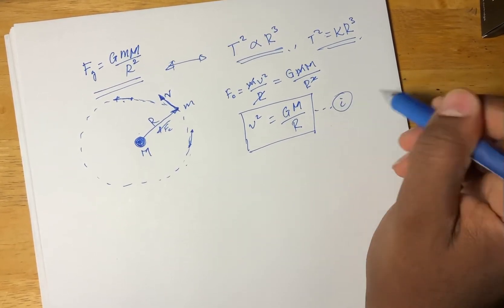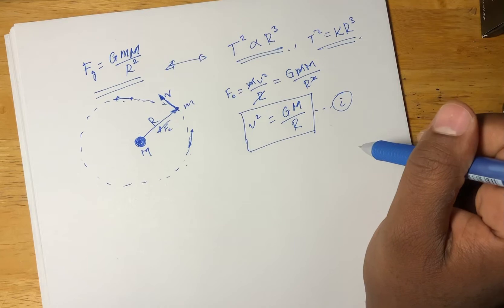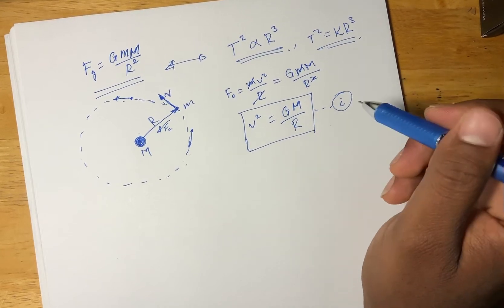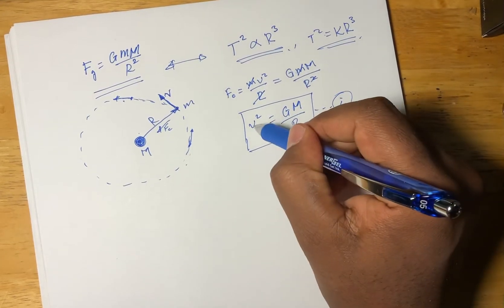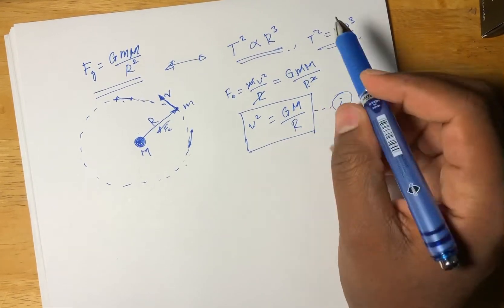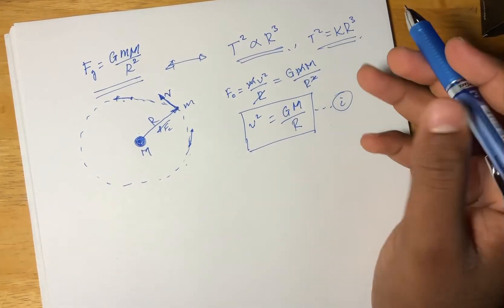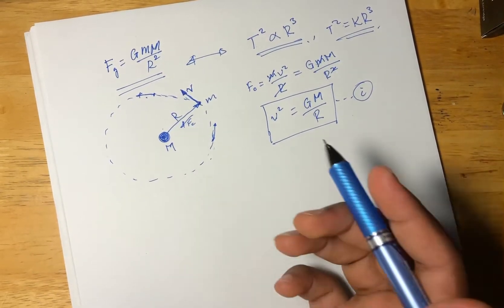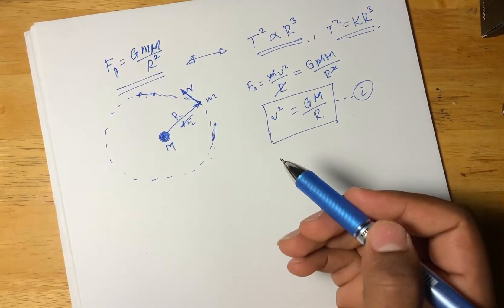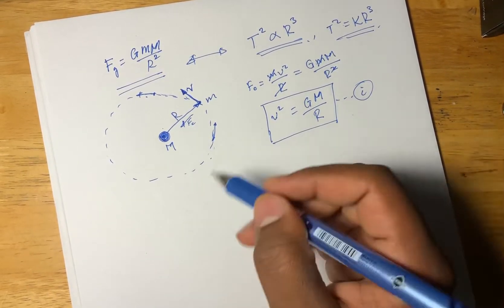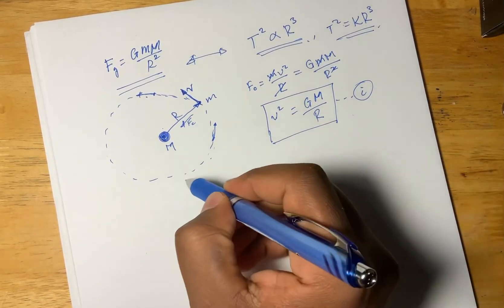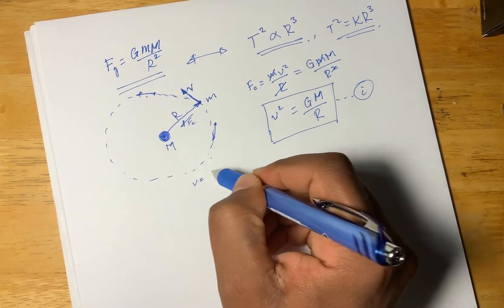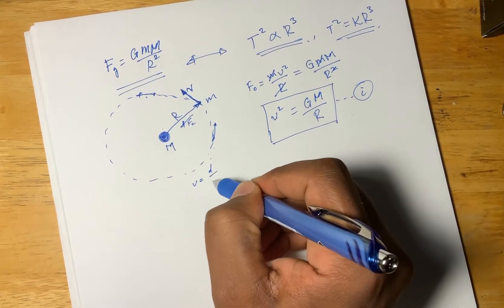Question 1: The velocity is a well-defined quantity. We know what tangential velocity is. It's velocity in general — distance over time.